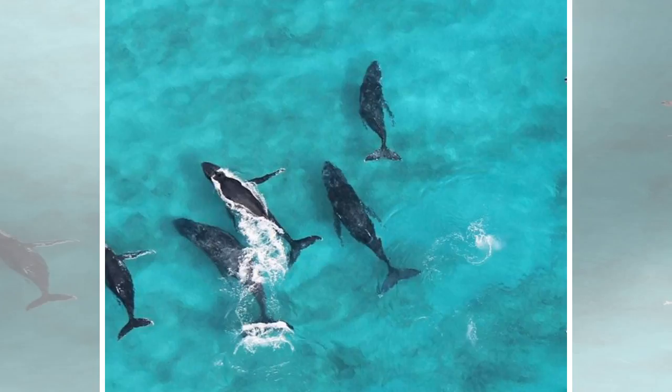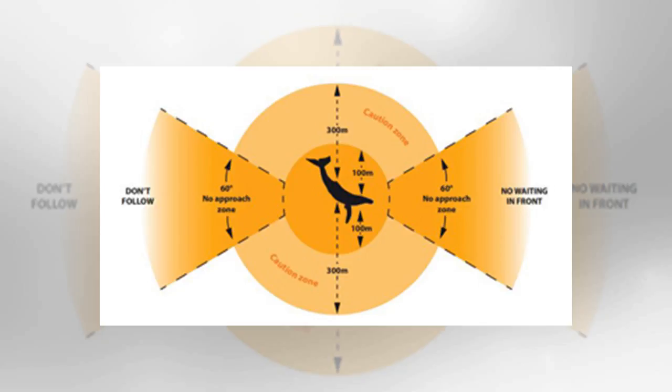Dr. Double said the death of a fisherman in Canada earlier this year demonstrated how unpredictable the animals could be. The man died after the whale flipped its tail after he had detangled it from fishing nets.